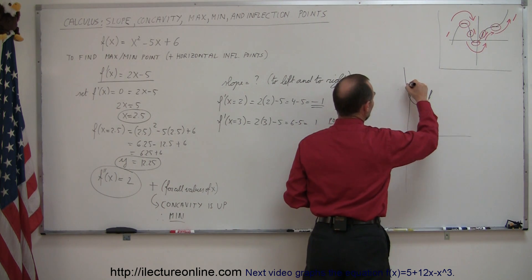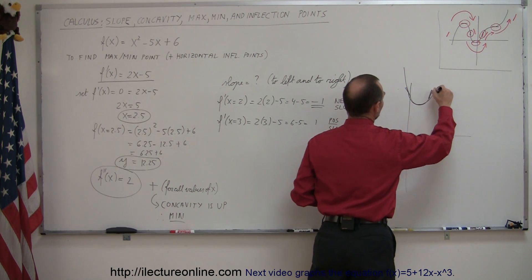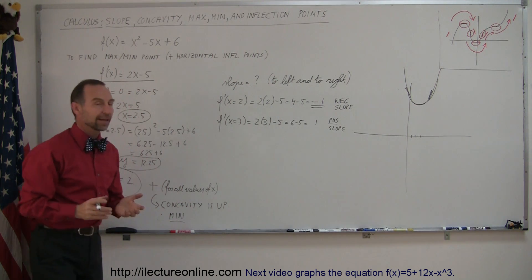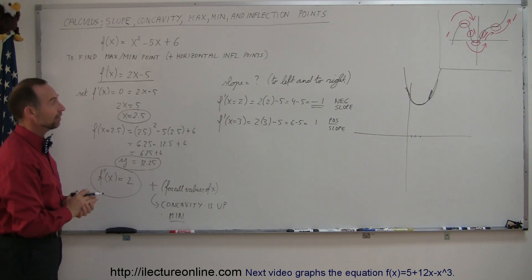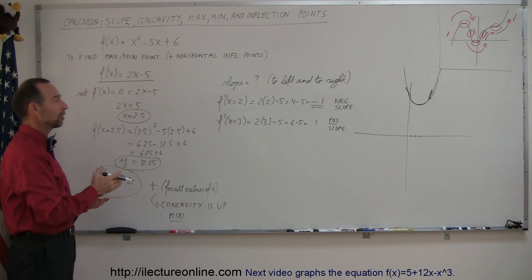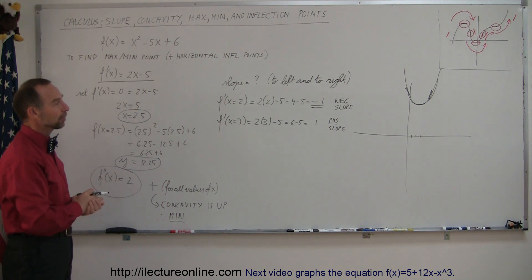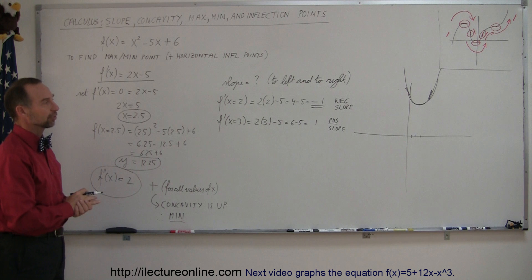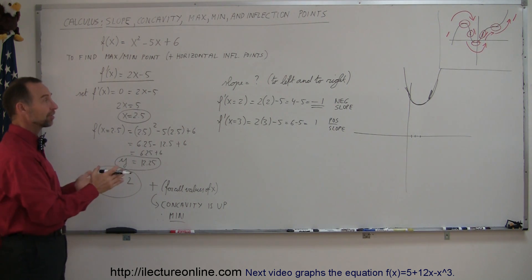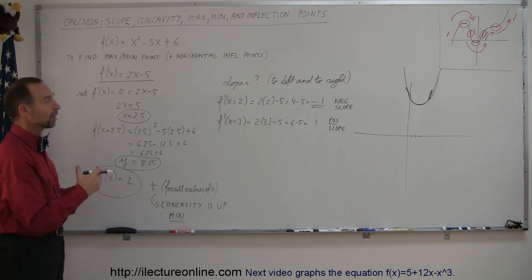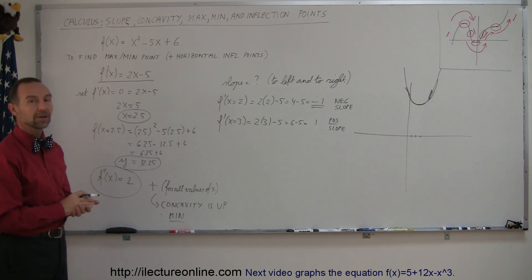Now I have everything I need. There's only one point where the slope is 0. The second derivative confirmed it's not an inflection point — since concavity was up, it's a minimum. By evaluating the slope to the left and right of the critical point using the first derivative, I can confirm negative slope on the left and positive slope on the right, consistent with a parabola. That's how you find max, mins, inflection points, slope, and concavity. That was a simple example — let me try something a little more challenging.